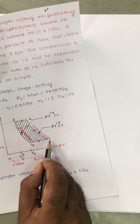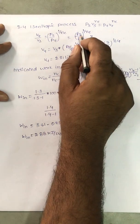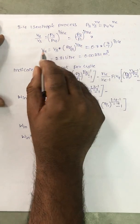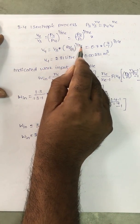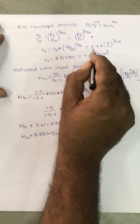P3 is equal to P2, P4 is equal to P1. P3 by P4 you can write P2 by P1 all power 1 by Ne. So V4 is equal to V3 into P2 by P1 all power 1 by Ne.